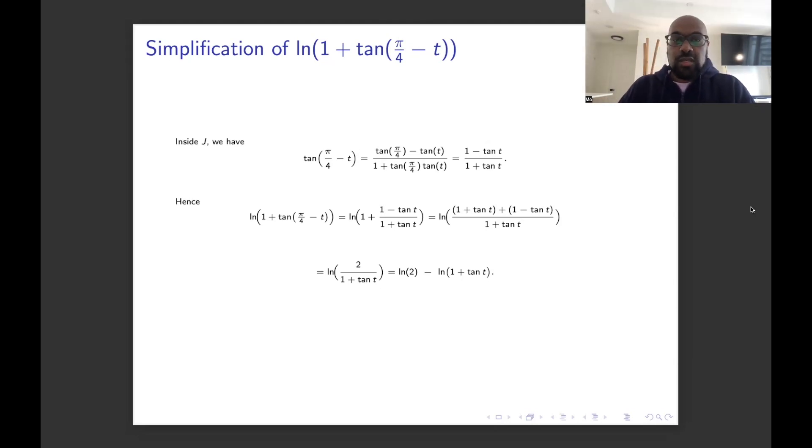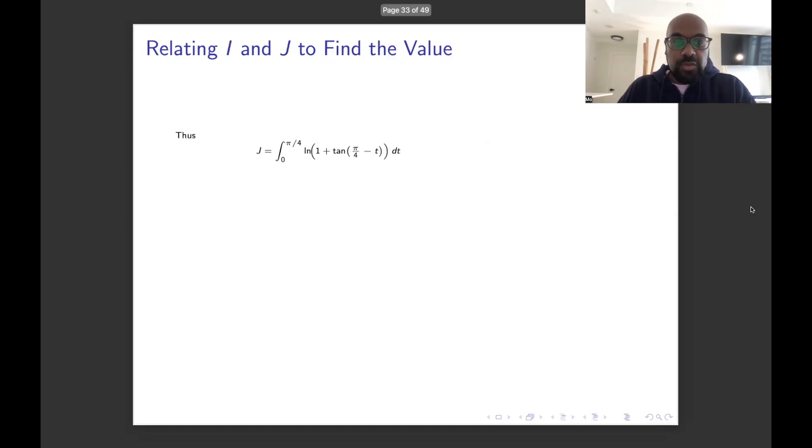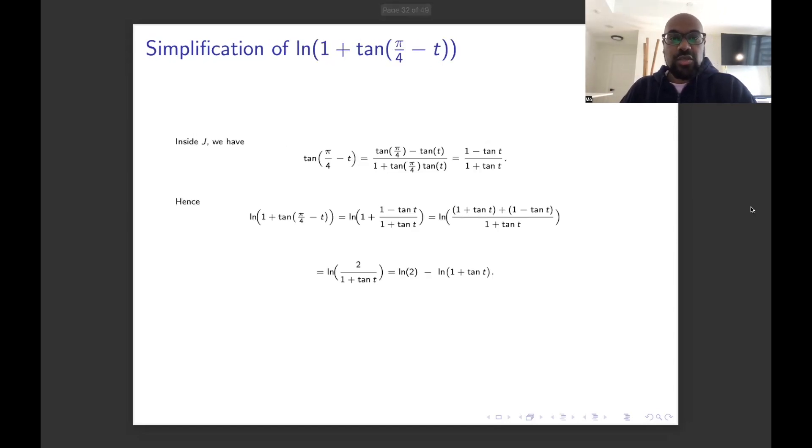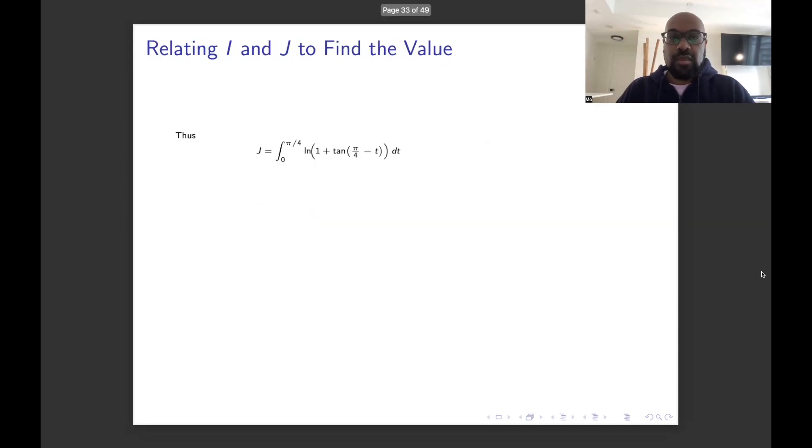So in other words, we can rewrite j, which was this integral right over here, using this entire set of expressions by substituting in this right-hand side for the left-hand side. And so if we do that, we end up with j being the integral from 0 to π/4 of ln(2) - ln(1 + tan t), all taken dt.